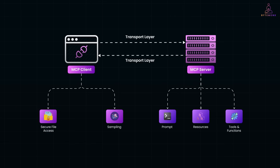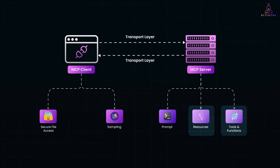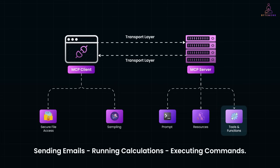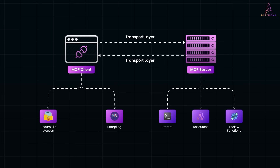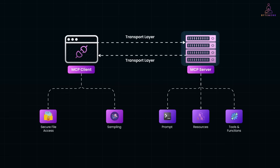The server provides three types of capabilities to the AI: prompts, resources, and tools and functions. Prompts are predefined instructions or templates that help guide the AI on how to interact with the tool efficiently — think of them as AI-friendly hints for better responses. Resources are like external data sources the AI can query, such as databases, APIs, or file systems. Tools and functions are actions the AI can perform, like sending emails, running calculations, or executing commands. When the AI assistant needs real-world information or actions, it uses MCP to send a request via the MCP client, and the transport layer delivers it to the MCP server, which processes it using prompts, resources, or tools before sending the response back.